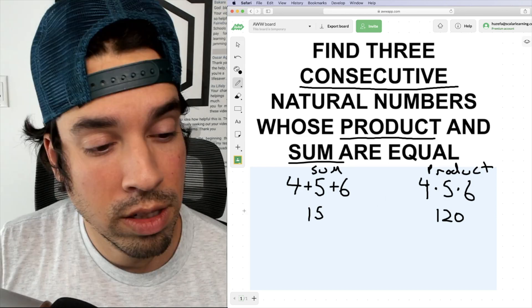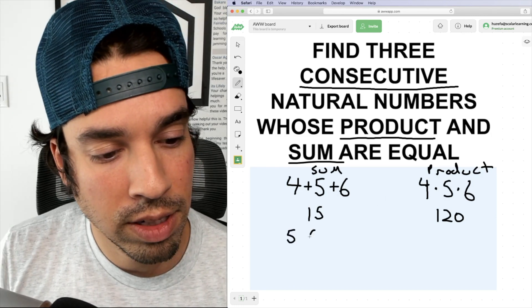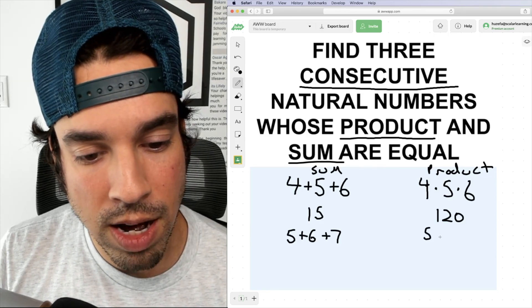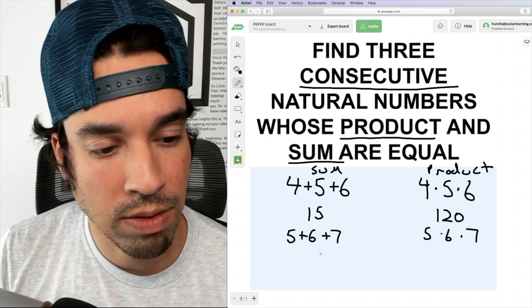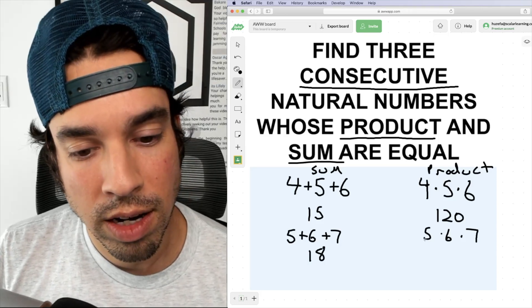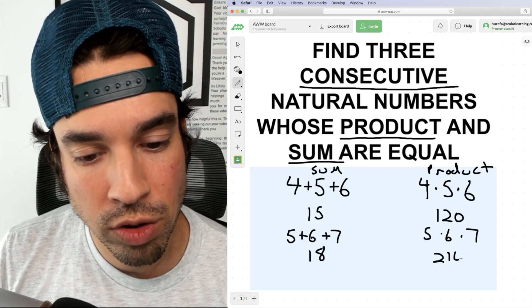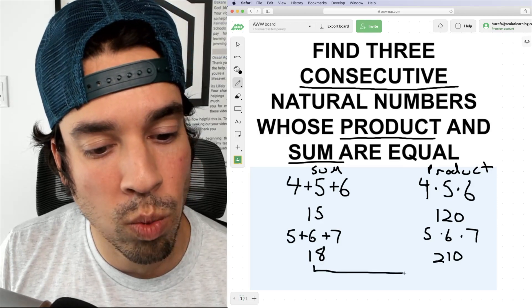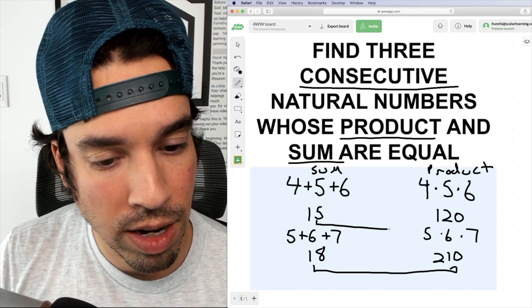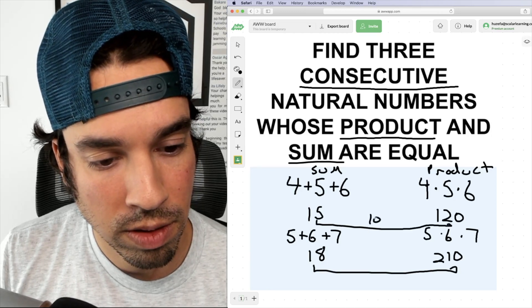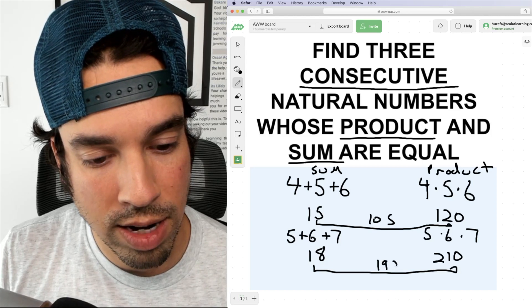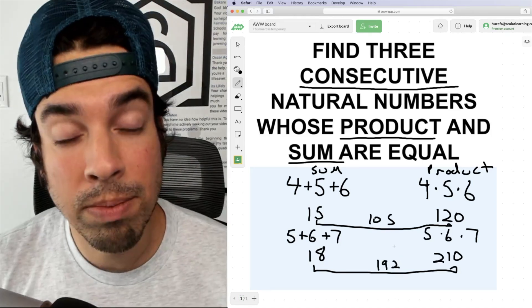Let's try another set. Let's try five, six, and seven. So we're gonna add those together. And we got five times six times seven. Here we've got 18. And here we've got 210. So it seems like the gap got wider, right? So here it was a gap of 105. And here it's a gap of 192. So it seems like as the numbers went up, the gap got bigger.